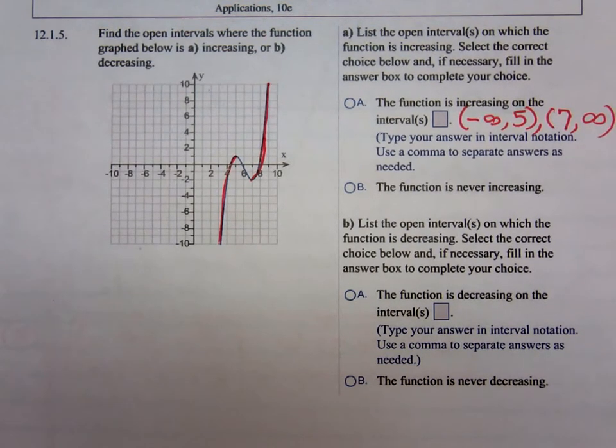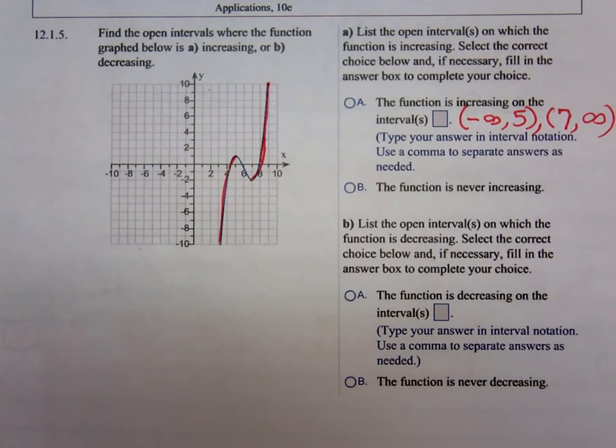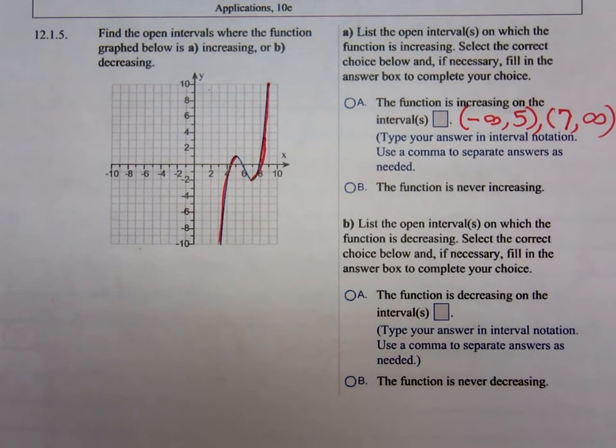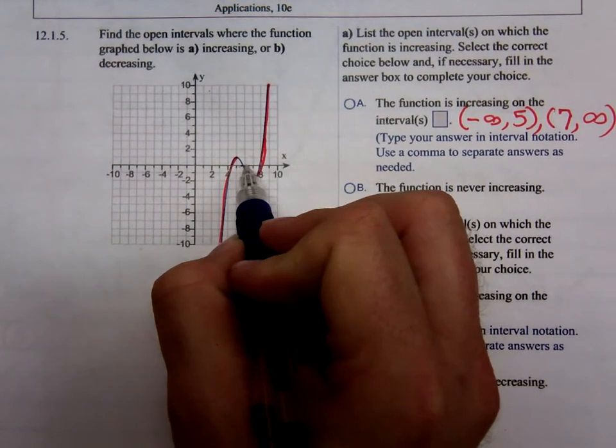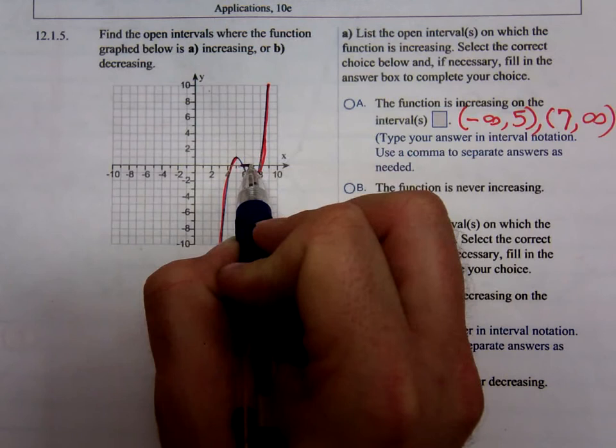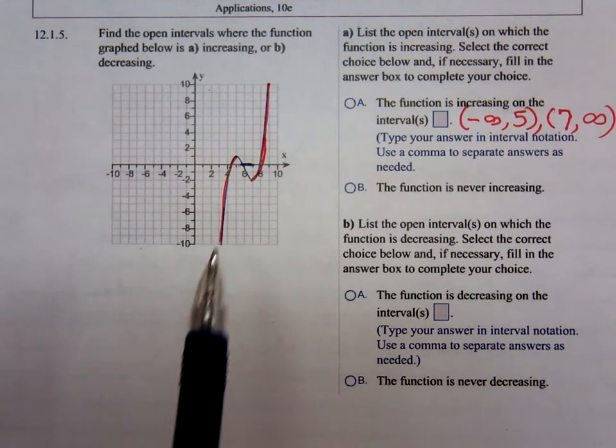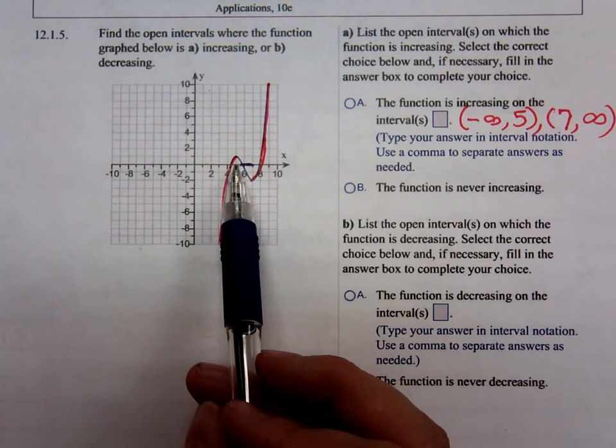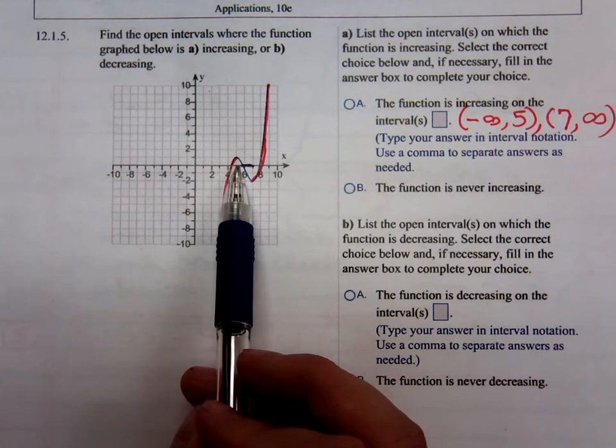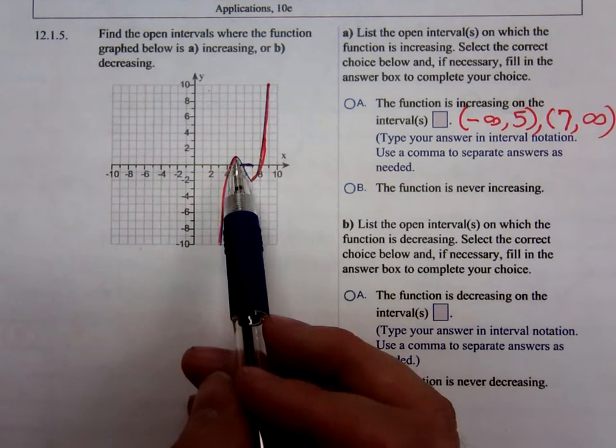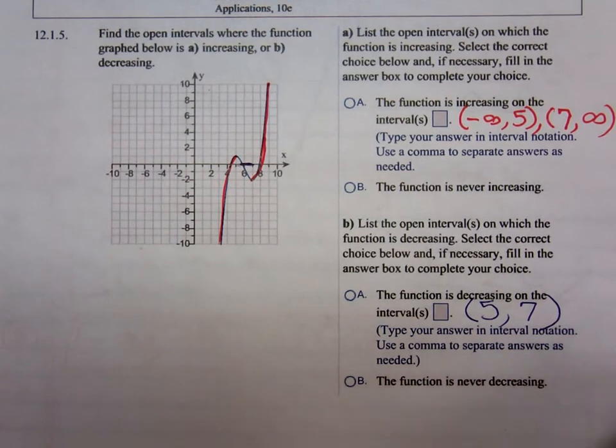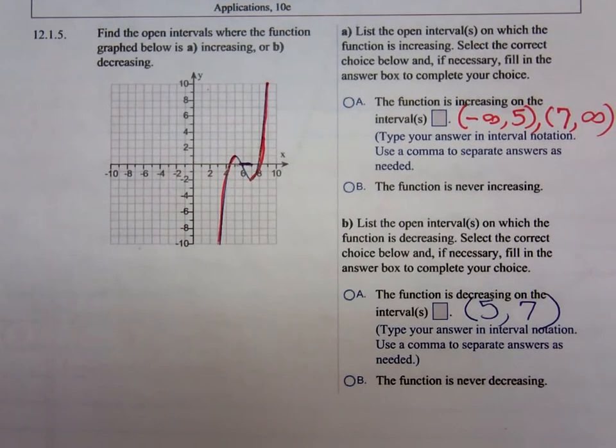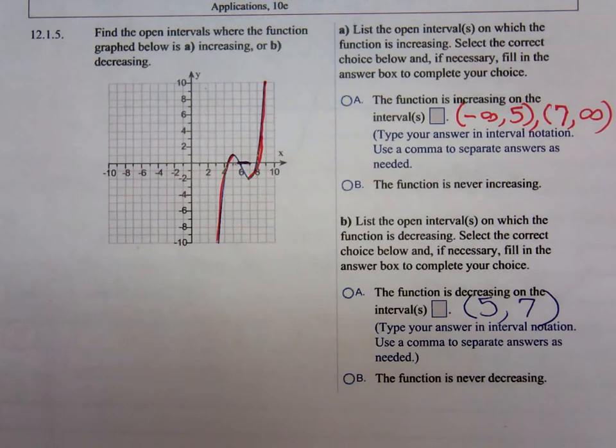Over how many intervals is the function decreasing? Just one. What's that interval? Now right here, it's right there. Give it to me in terms of the x-axis. It starts decreasing at 5, stops decreasing at 7. You're looking at that small little portion where the graph is falling, from 5 to 7. And that's all they're looking for there. Any questions?